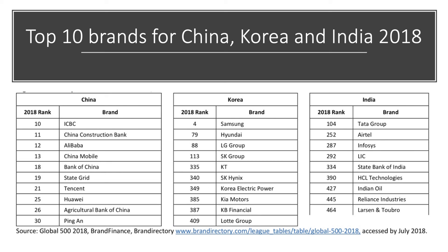One of the great stories in globalization is the emergence of significant brands from countries such as China, Korea, and India — whether it's Alibaba, Tencent, or Huawei from China; Samsung, LG, or Kia Motors from South Korea; or Tata, Infosys, and Reliance from India. These globally scaled businesses that add value through their own supply chains are crucial to driving and lifting the growth performance of these countries in a globalized world.